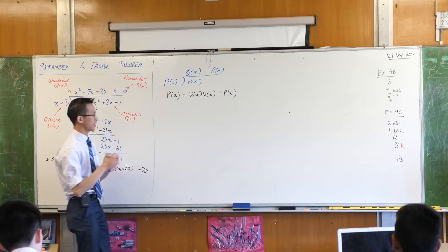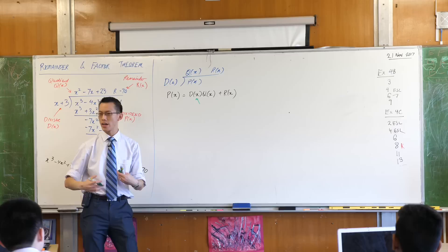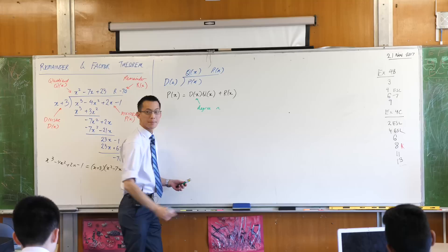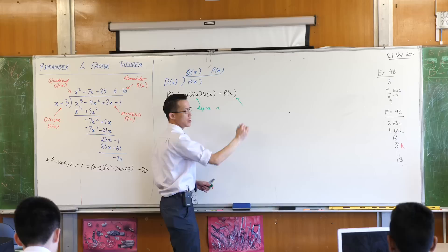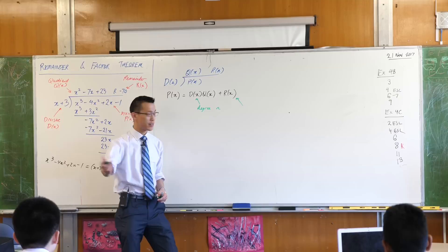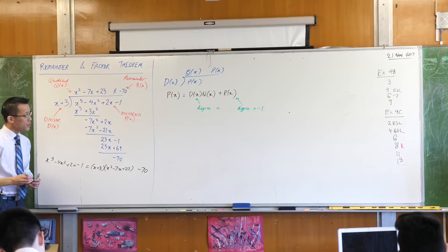Let's make that statement again about the degrees because that's going to become quite important in a second. If this divisor here has a degree of, I mean you can have any degree, can't it, let's say degree n. What that will mean is the remainder over here has a degree of what? Yeah, one less will be n minus 1.